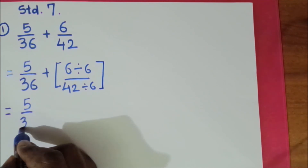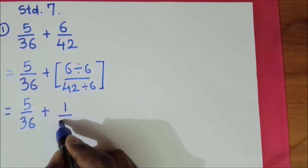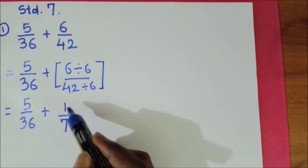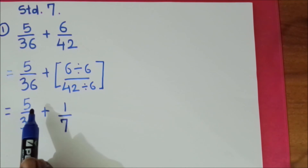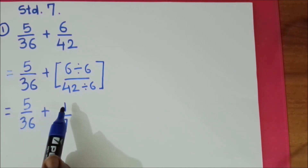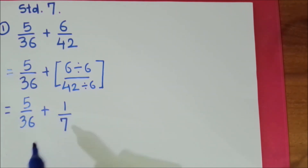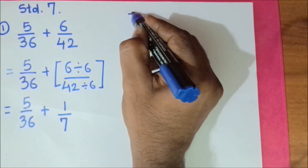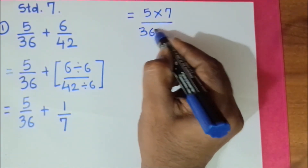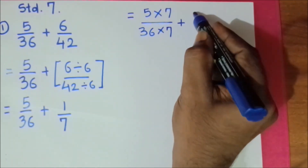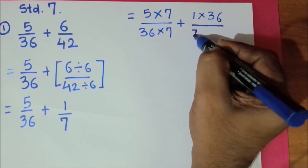6 ones are 6, 6 sevens are 42. So we got the new fraction 1 upon 7. Now we have to make the denominators equal to add the numerators. For that we will multiply the first fraction by 7 and this rational number by 36: 5 multiplied by 7 plus 1 multiplied by 36, upon 36 multiplied by 7.